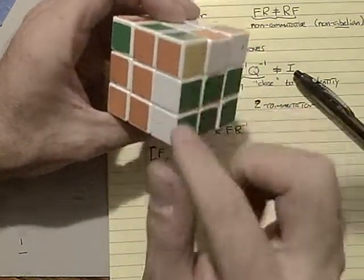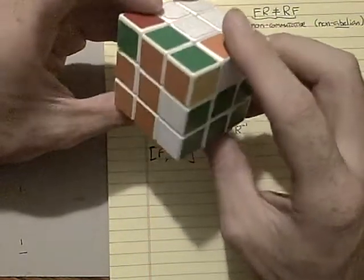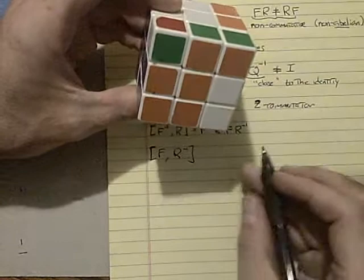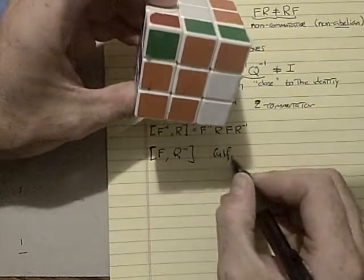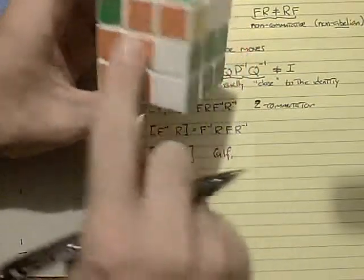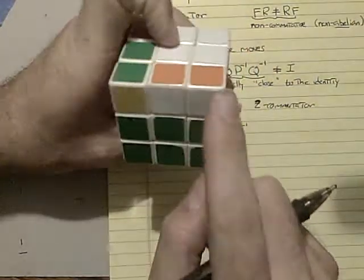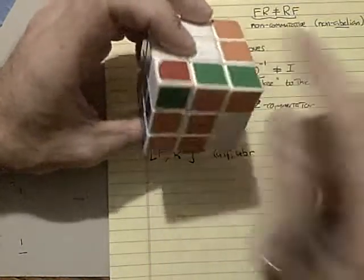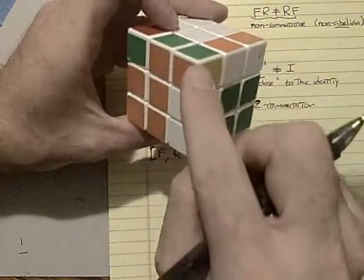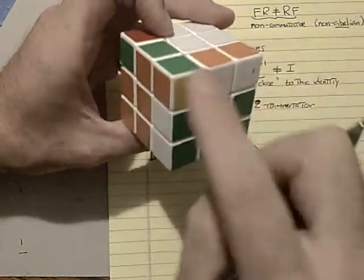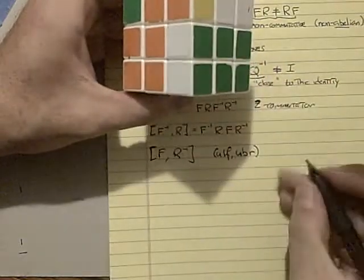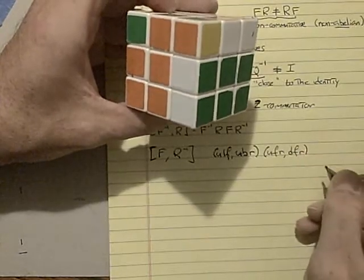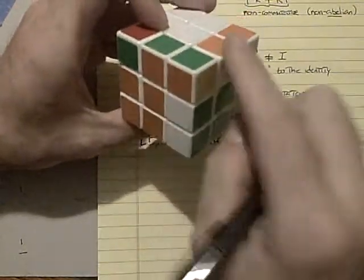But it does pretty much the same thing. You notice, let's do it cycle notation just for fun. If I do up, left, front, that's white, blue, orange. White, blue, orange is over here. So that's up, back, right. And they've swapped. That's closed. Now right here, I've got a white, orange, green. So these two have switched. So that would be up, front, right, down, front, right. They've switched. And then again, there's a three cycle on the edges.